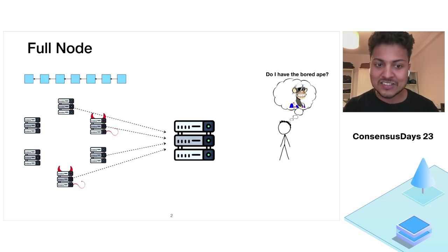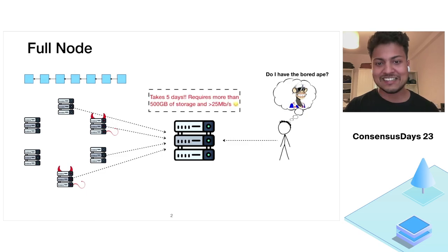As long as the full node connects to one other honest full node, it will successfully sync. Once the full node has synced, Bob can simply query the full node. Unfortunately, this takes more than five days and requires over 500 gigabytes of storage for Ethereum.